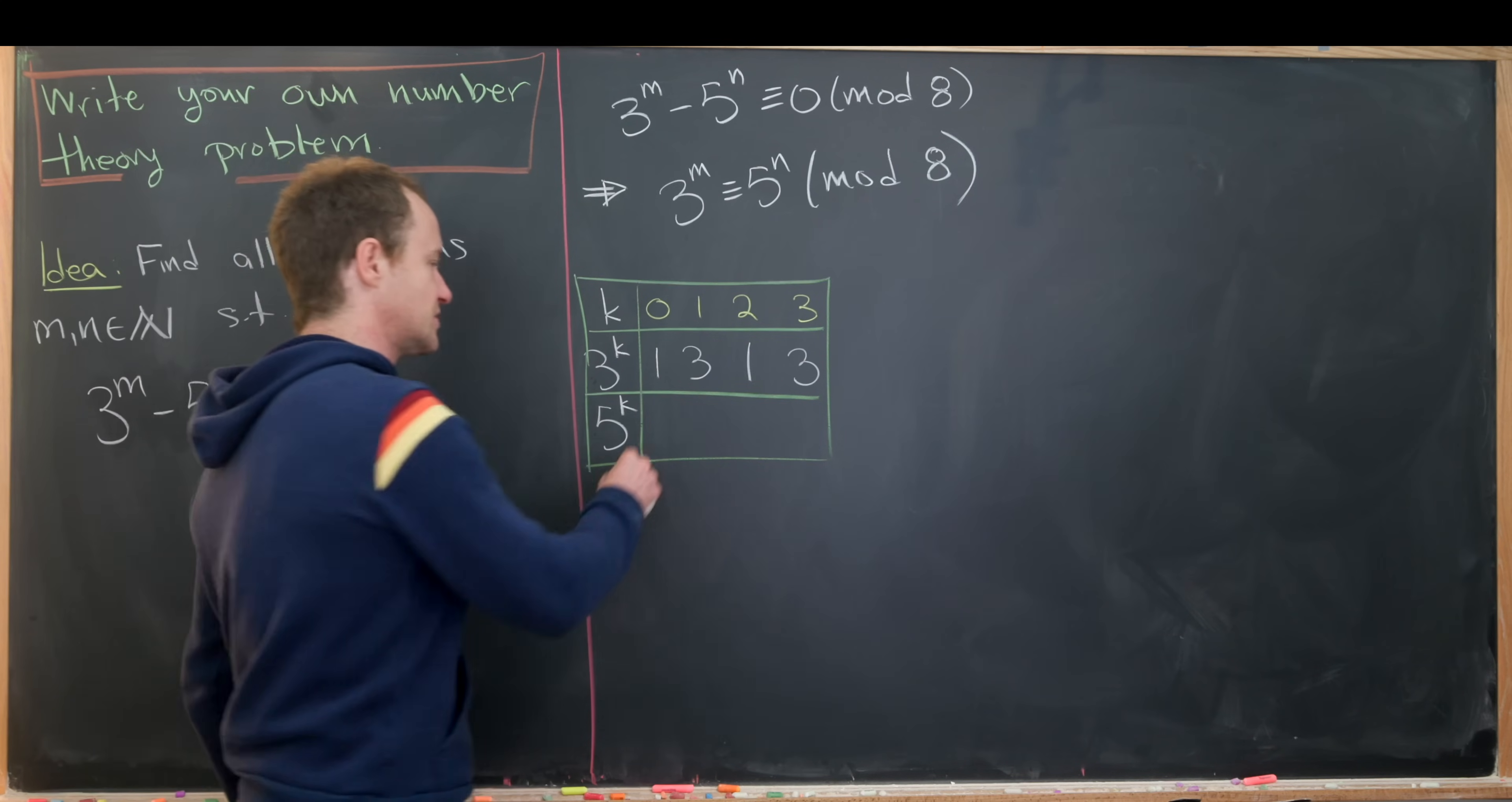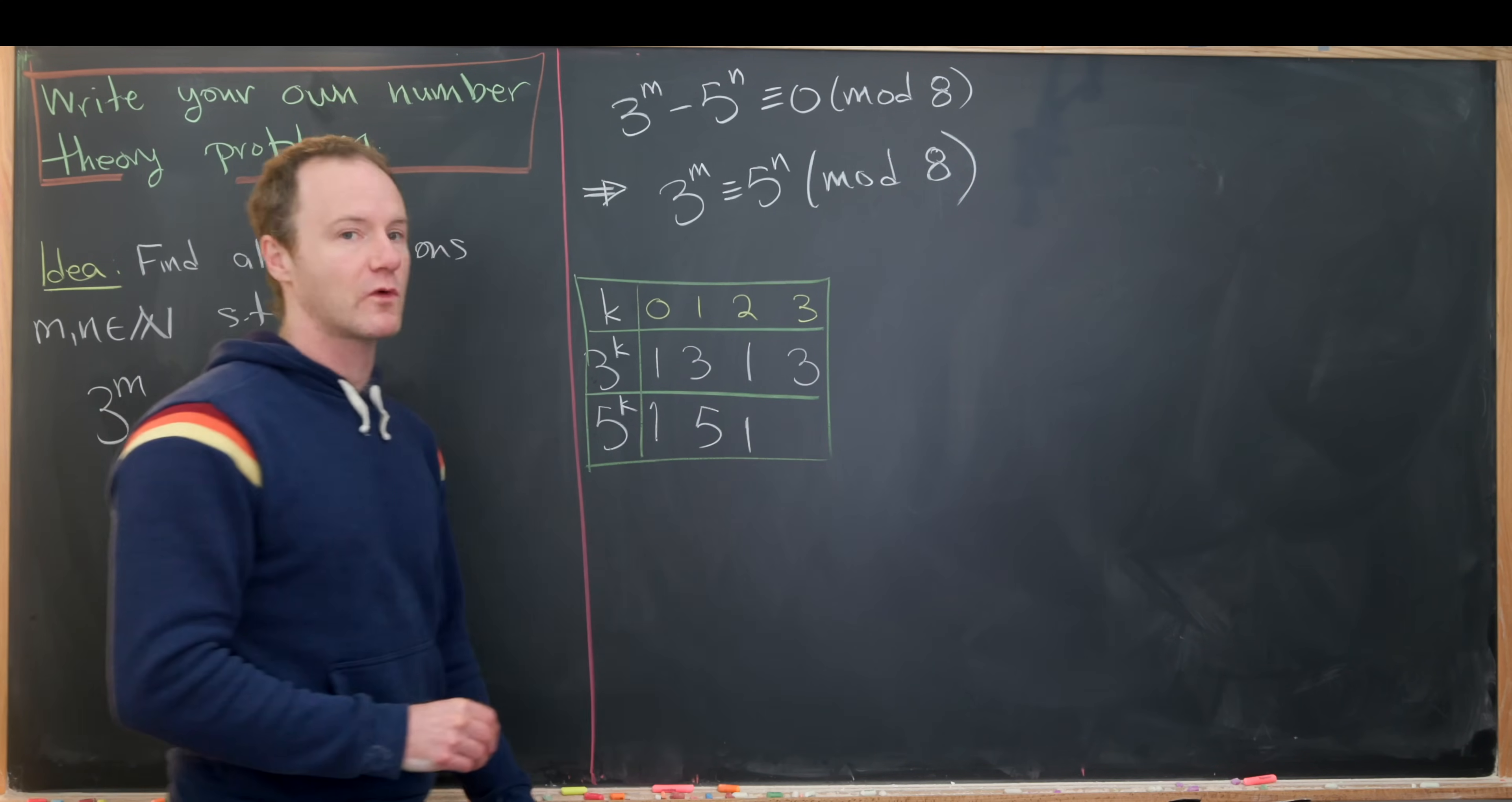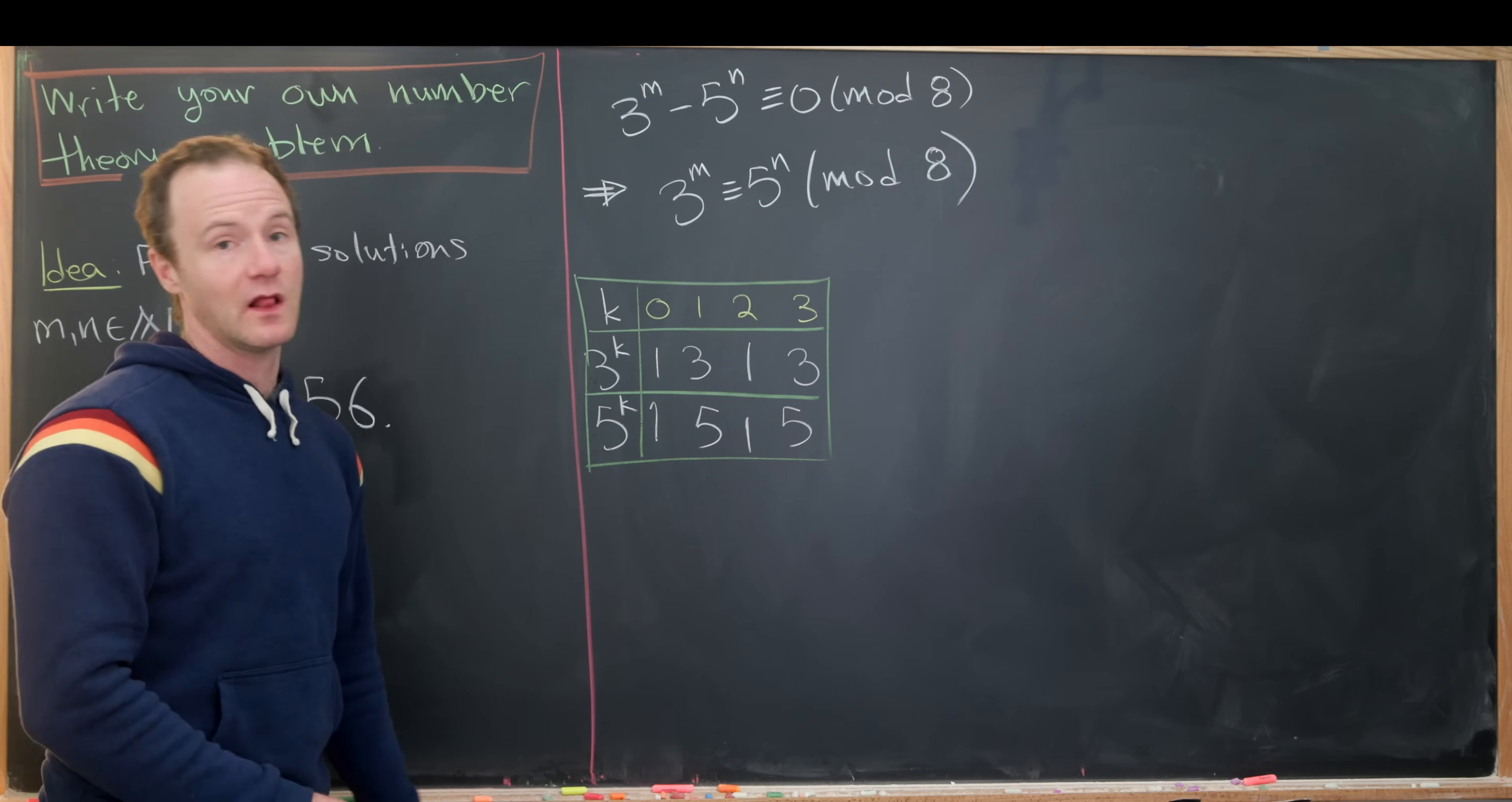Now let's look at 5 to the 0, which is 1. 5 to the 1 is 5. 5 squared is 25, but mod 8 that's also 1 because it's 1 more than 24. 5 cubed will be 5 again. Now we're in this repetition: 1, 3, 1, 3 in the upper row; 1, 5, 1, 5 in the lower row.